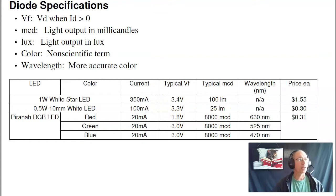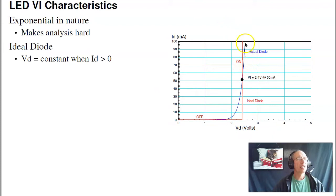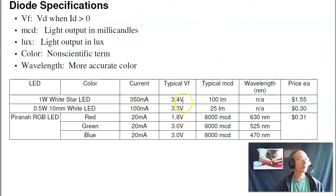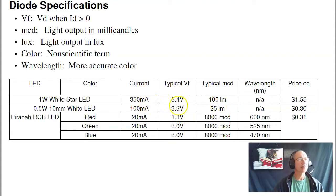The voltage drop comes from the VI characteristic. They're trying to specify a nonlinear curve with a single point, so they pick some current and tell you the voltage at that one point. If the current varies, the voltage does vary. Assuming an ideal diode, the voltage will be roughly constant for any current flow. A white star LED has a voltage drop of roughly 3.4 volts, and a red LED is roughly 1.8 volts. Current is light — if I have the current, I'm going to have the brightness.